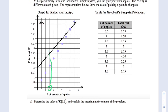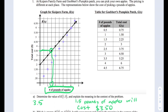The x is representing the number of pounds of apples and the y is representing the total cost. So what this is telling us is that if you put in 1.5, you get back 3.5, so one and a half pounds of apples will cost three dollars and fifty cents at Kuipers Farm.